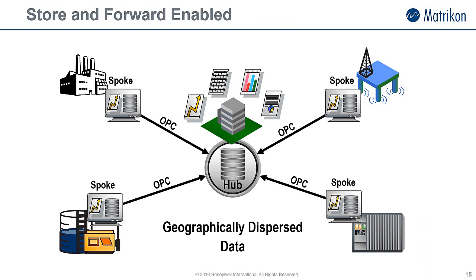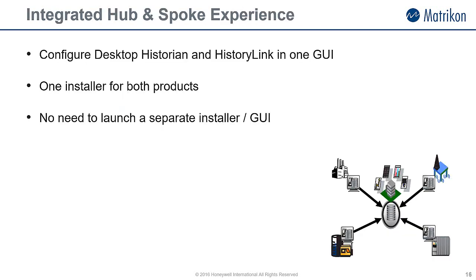Another great feature of the Matricon OPC Desktop Historian is the built-in store and forward functionality, which is sometimes called hub and spoke. If you have multiple plants that are geographically dispersed, why not consider folding the data from Desktop Historian at your local plants back to a central location? Because of the open nature of OPC, your local sites can access the archived data locally, whilst enabling your head office to also access the data. This was possible in the past using Matricon OPC Desktop Historian and HistoryLink. In the new version, Matricon makes it easier to install and configure this system. When you install Matricon Desktop Historian, you are given the option of a standalone or hub and spoke installation. If you choose hub and spoke, Matricon HistoryLink is also installed, and both products are integrated into the same GUI for ease of use.